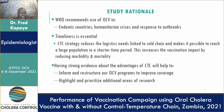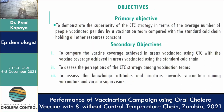Generating evidence about the advantages of CTC will help inform and restructure our OCV programs to improve coverage and ultimately protect people from cholera. It will also help to highlight and prioritize additional areas of research. Our primary objective was to demonstrate the superiority of the CTC strategy in terms of the number of people vaccinated per day by the vaccination team compared to those vaccinated using the standard cold chain, holding all other resources constant.